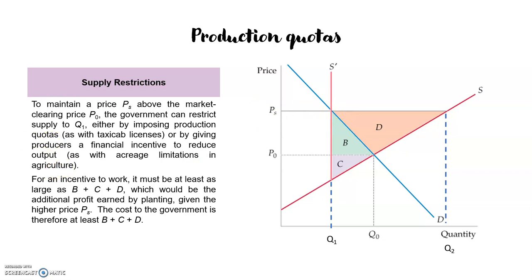This is exactly how many city governments maintain high taxi fares — they limit total supply by requiring each taxi cab to have a license and limiting the total number of licenses. The winners of this regulation are obviously taxi cab companies that own the licenses, and the losers are consumers. With production quotas, if we limit the supply, supply becomes a completely inelastic vertical line at quantity q1 where the quota is set, and the market price increases from p0 to PS.